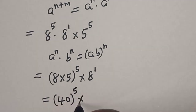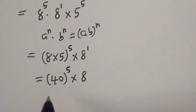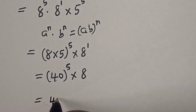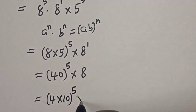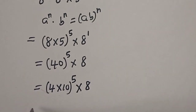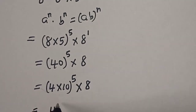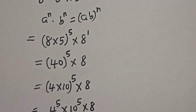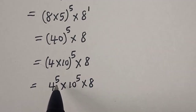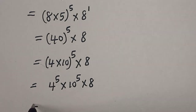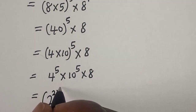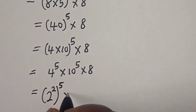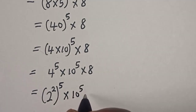8 times 5 equals 40, so we have 40 to the power of 5 multiplied by 8. Then 40 is also 4 times 10, so this becomes 4 times 10 raised to power 5, multiplied by 8. This gives us 4 raised to power 5 multiplied by 10 raised to power 5, multiplied by 8.